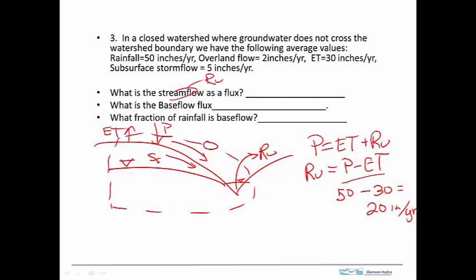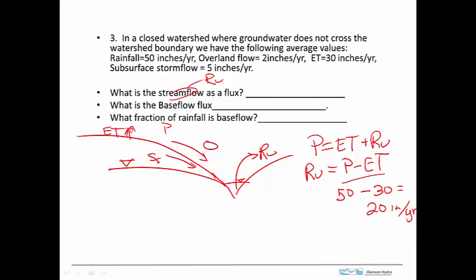Now we know everything in the sketch. We'll go on to the next part — we need the base flow flux. Let's put in the answer: 20 inches per year. Always include the units with every answer. For the base flow, we have to account for it, and now we'll draw a control volume on the stream.